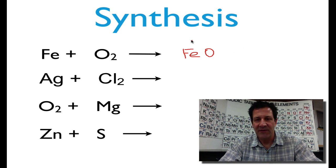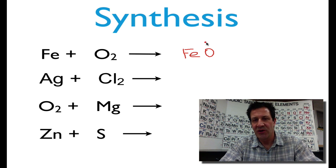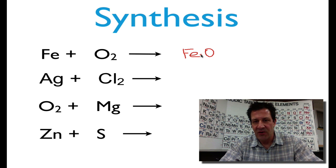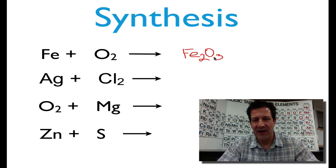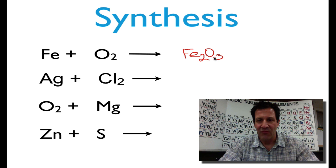We have iron — in this case it's going to have a plus three charge. Oxygen has a minus two charge, so we know it's going to be Fe₂O₃, using the crossover rule to determine the ratio of iron to oxygen in our ionic substance. That is simply rust, or iron oxide.